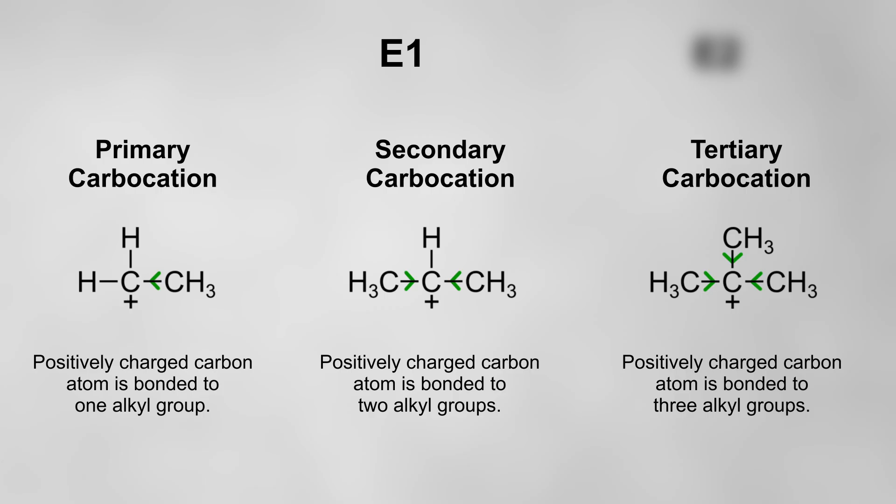The more alkyl groups there are, the more electrons are being pushed, and therefore the more the positive charge is stabilized. So primary carbocations are the least stable, followed by secondary carbocations, and then tertiary carbocations are the most stable.